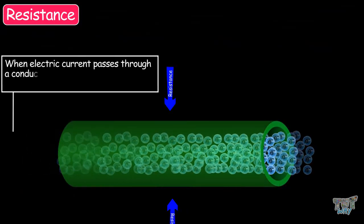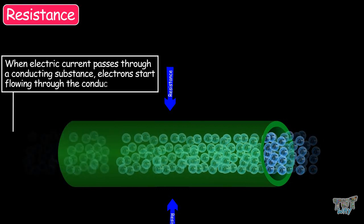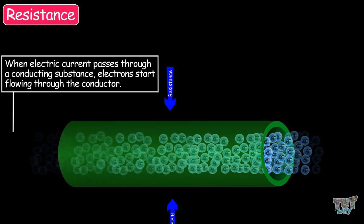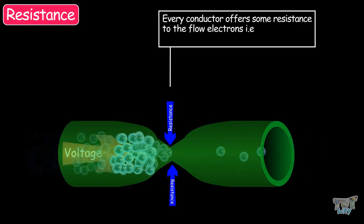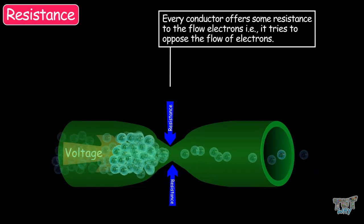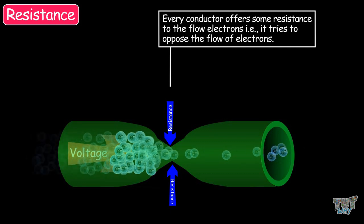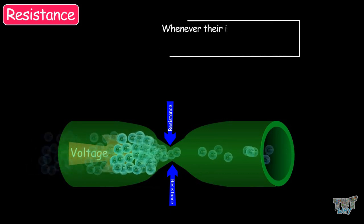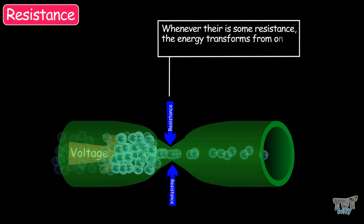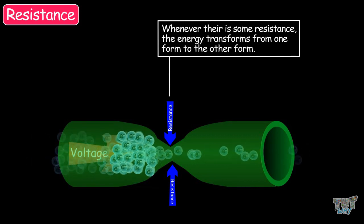When an electric current passes through a conducting substance, electrons start flowing through the conductor. And every conductor offers some resistance to the flow of electrons, as in it tries to oppose the flow of electrons. And as we have discussed earlier, whenever there is some resistance, energy transforms from one form to another form of energy.